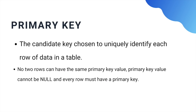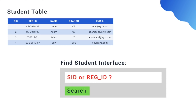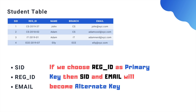A primary key is a candidate key which is used to uniquely identify every row of data in a table. Since we have three candidate keys and all of them can do so, you can make any one a primary key — this is generally done by the database administrator. For example, if we create a simple user interface to search for student information, Registration ID, which every student knows and is more meaningful for college administration, makes more sense as the primary key over SID. All the remaining candidate keys not selected as primary key are called alternate keys.